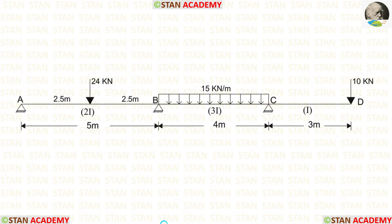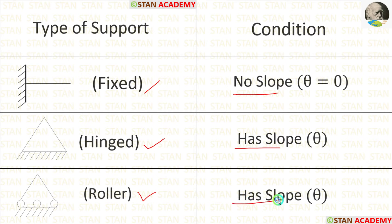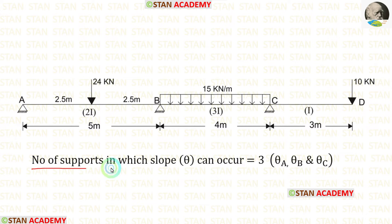In the slope deflection method, we have to check the number of supports where slope can occur. In a fixed support there will be no slope. In a hinged support or roller support, there will be slope. In this beam, at points A, B, and C there are hinged supports, so the number of supports where slope can occur is 3.